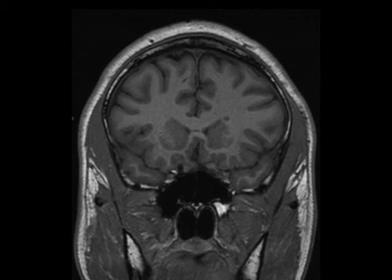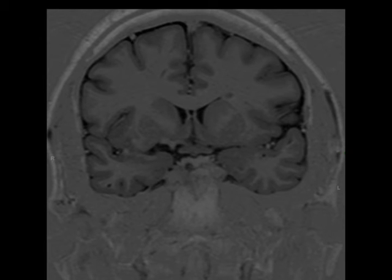33-year-old male with a history of recurrent seizures. The coronal T1 and inversion recovery sequences demonstrate an ovoid focus within the periventricular white matter of the left frontal horn, which is hypo-intense to surrounding white matter but iso-intense to cortical gray matter.